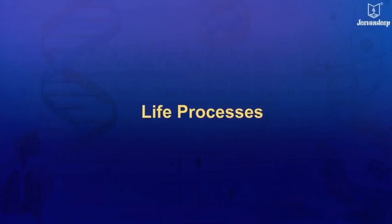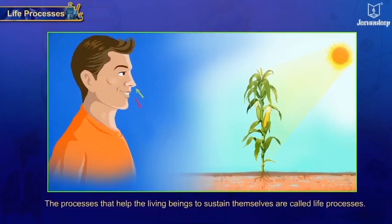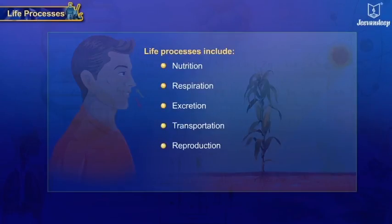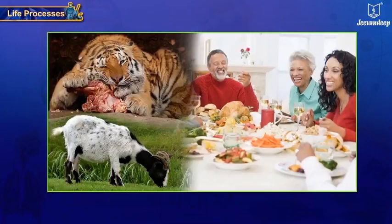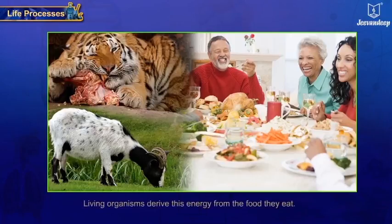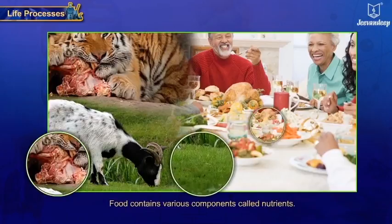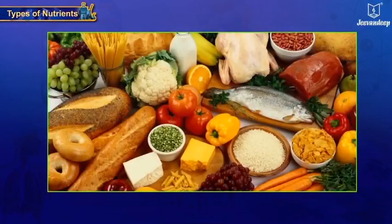Life processes are the processes that help living beings to sustain themselves. These processes include nutrition, respiration, excretion, transportation, reproduction, sensitivity, and growth. Living organisms require energy for carrying out their various life processes. They derive this energy from the food they eat. Food contains various components called nutrients.